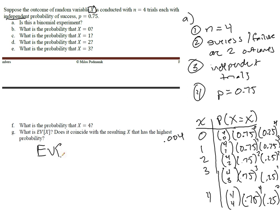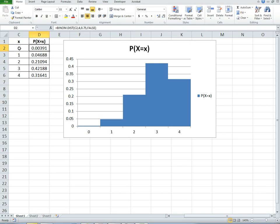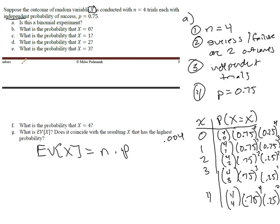In this case, expected value, in this case, would be the number of trials times the probability of success. Alternatively, this times this, plus this times this, plus this times this, by the definition of expected value. But we should get the same thing if we just do 4 times 0.75. So, we would expect that out of 4 trials, 3 quarters of the time, or 3 times, we'd get successes. That that would be the most, that that would be the expectation.